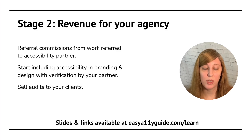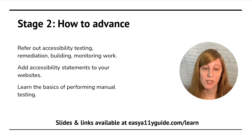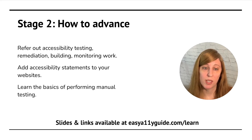To drive revenue within your agency at this stage, you'll be getting referral commissions for work referred out to your accessibility partner. You will be including accessibility in your branding and design with your partner to verify you're getting it right. You'll start selling audits to your clients. To advance from stage two to the next stage, you're going to refer out testing, remediation, building, and monitoring work, but you can start selling this to your clients and driving revenue, which also helps motivate you to include more accessibility going forward.